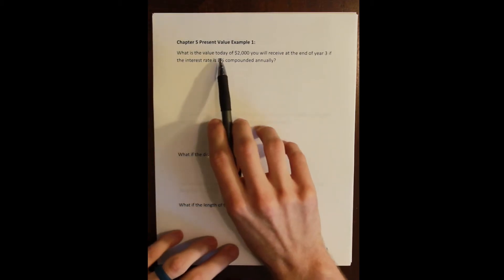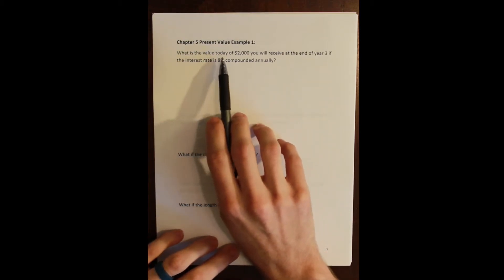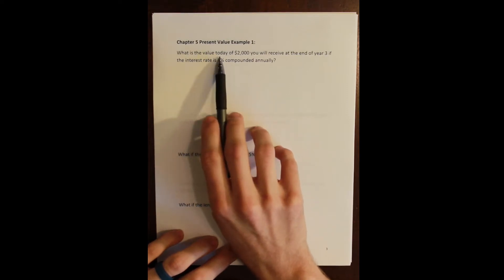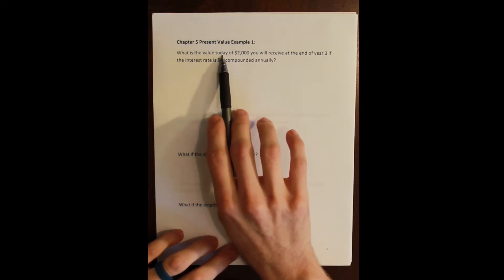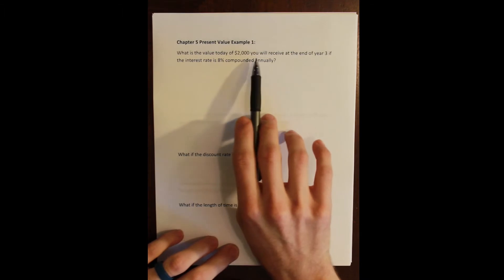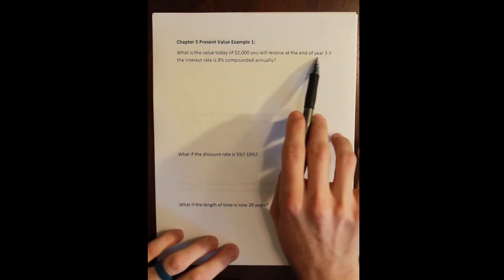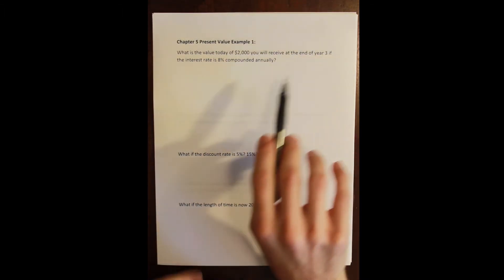So this question says, what is the value today of $2,000 that you'll receive at the end of year 3 if the interest rate is 8% compounded annually? The thing that's going to give away present value problems is things like 'today.' What is the value today? This says, in other words, what is the present value of $2,000 that you're going to receive at some point in the future, three years in the future to be precise.